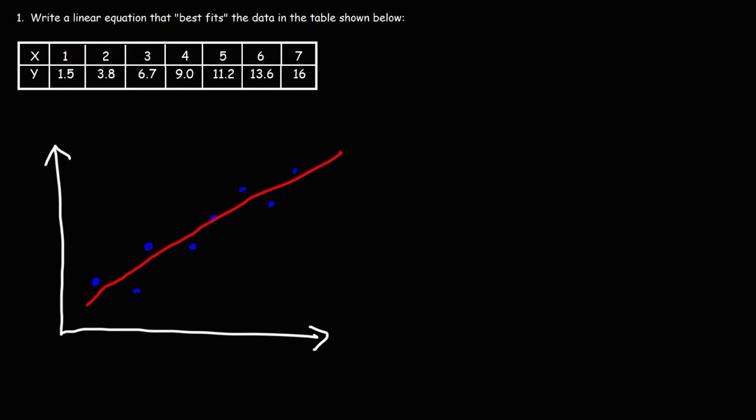We're going to use a method called the least squares method to find the equation of the line. Once we have it, we're going to test that equation to see how accurate it is in giving us the y values when we input the x values. And then we're going to confirm our answer using Excel. So let's begin.